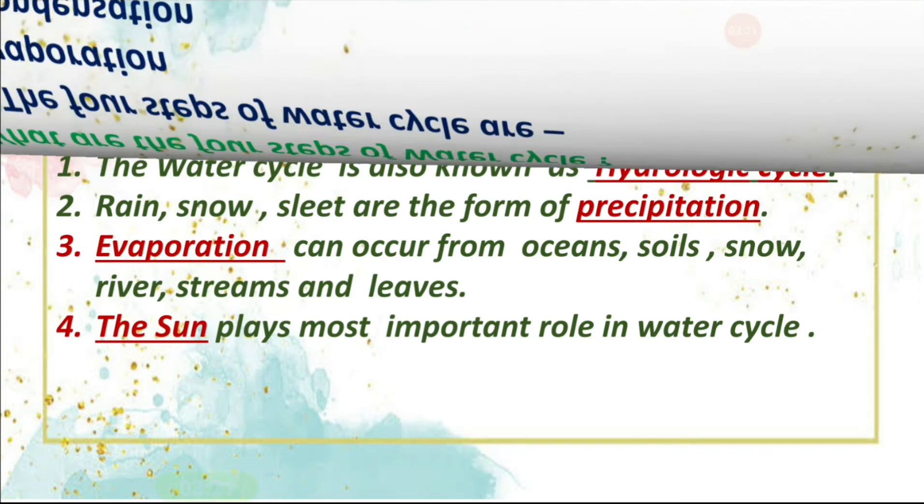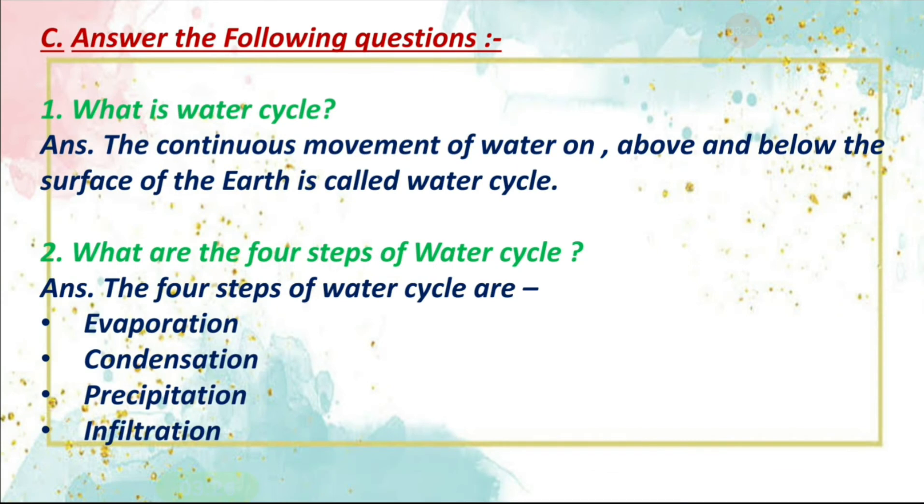Let's move to next exercise, which is answer the following question. First question is, what is water cycle? Answer is, the continuous movement of water on, above and below the surface of the earth is called water cycle.